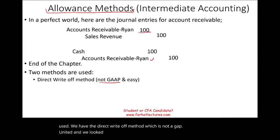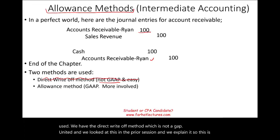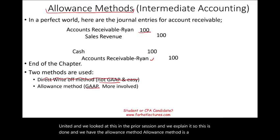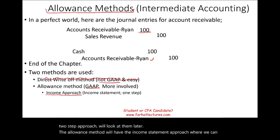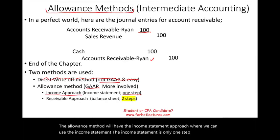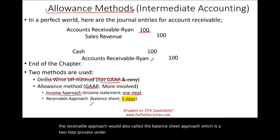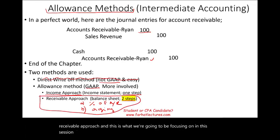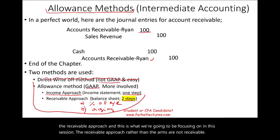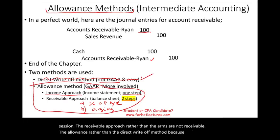We looked at the direct write-off method in the prior session. And we have the allowance method. The allowance method is a GAAP method and is a little bit more involved. It will have a two-step approach. The allowance method will have the income statement approach, and we have the receivable approach, also called the balance sheet approach, which is a two-step process. Under the balance sheet approach, we could use a percent of receivable or we can use the aging process. We're going to be focusing on the allowance rather than the direct write-off method in this session.